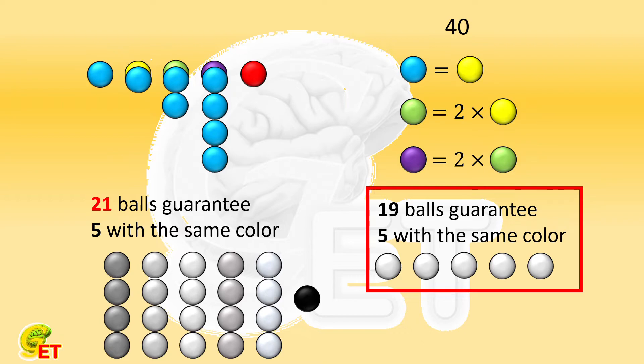But in this question, at 19 rather than 21, what does that mean? It means that for some colors, the number of balls is smaller than 4. And in total, it is smaller by 2.